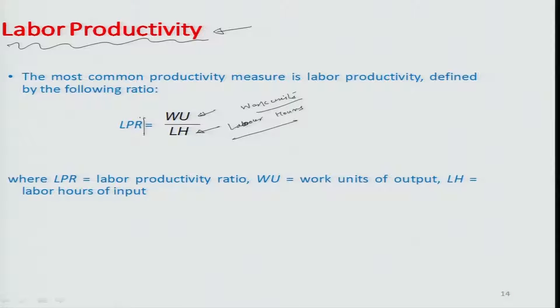Productivity can be improved by either increasing work units per labor hour or reducing labor hours per work unit. Both ways yield improvement in overall labor productivity. This is where ergonomics comes in — if work is not being done properly and you find a way to do it spending less time or less effort, perhaps through a technology improvement, you are essentially attacking and improving labor productivity.